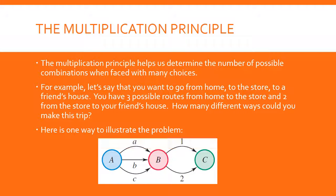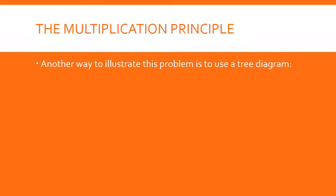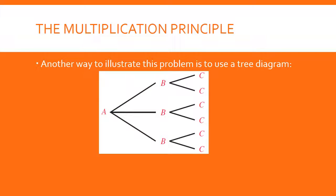Here's one way to illustrate the problem. Let's say A is your home, B is the store, and C is your friend's house. You could go route A from home to the store and then route 1 to your friend's house, or A then 2, or B then 1, B then 2, or C then 1, or C then 2. That gives us a total of six.